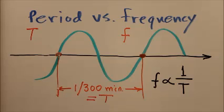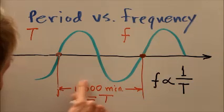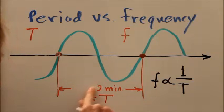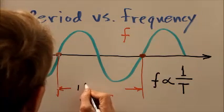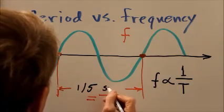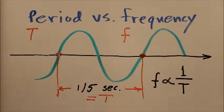That is the length of time it takes for one cycle, and we're told here in this question that it's 1/300th of a minute. Well, we can also call that 1/5th of a second. That's 1/300th of a minute.